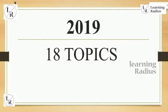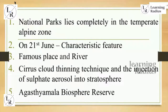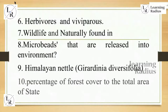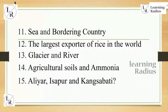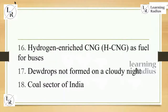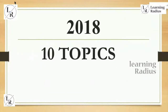Looking at 2019, they asked 18 topics: national park lying completely in the temperate alpine zone, 21st June characteristic features, famous places and rivers, cirrus cloud thinning technique and injection of sulfate aerosol into the stratosphere, Agasthyamala biosphere reserve, topics overlapping with ecology, herbivores and viviparous wildlife naturally found, microbeads released into the environment, Himalayan nettle, percentage of forest cover to total area of a state, sea and landlocked countries, largest airport rise in the world, glacier and river, agriculture soils and ammonia.